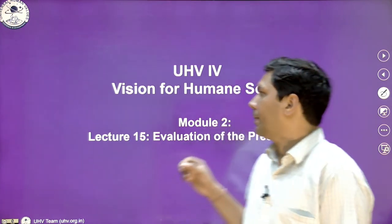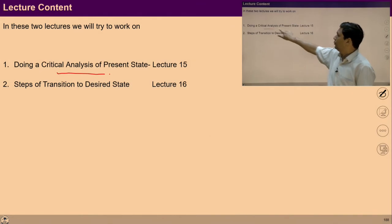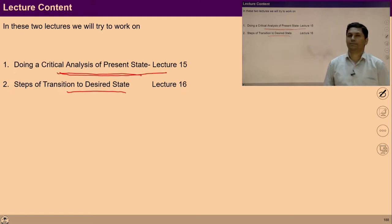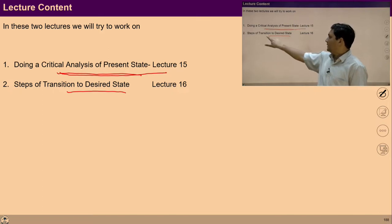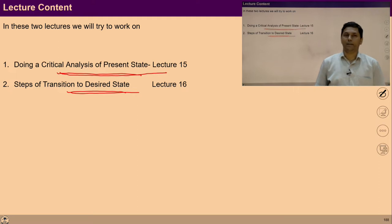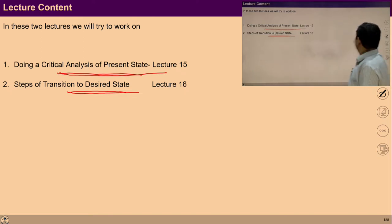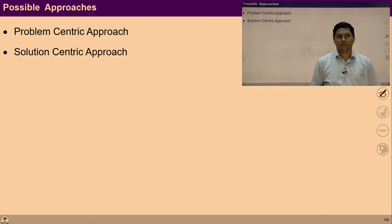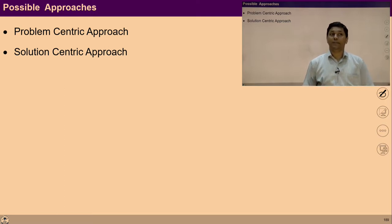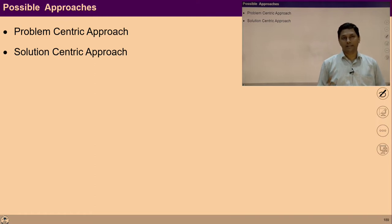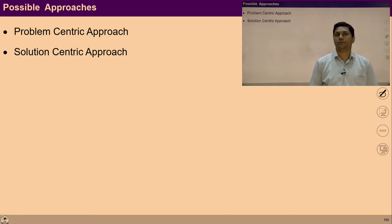So basically we are going to discuss two points. In this lecture we are going to critically evaluate the present society, and in the next lecture, lecture number 16, we will see the steps for transition to reach the desired state of the society. The major concern is to review and analyze the present culture and civilization with a view to whether we are promoting human characteristics, perspectives and tendencies or not.